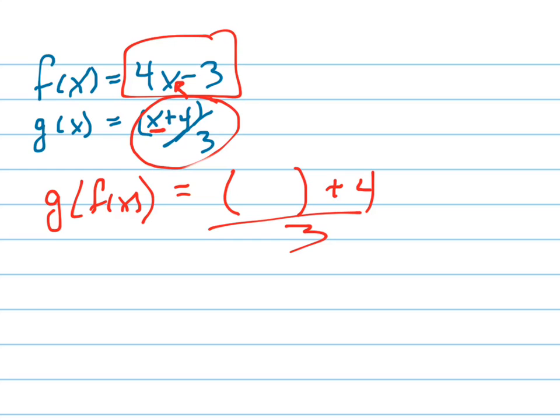because I'm going to plug, instead of x, I'm going to plug f of x in where I saw the x. And f of x is 4x minus 3. So 4x minus 3 goes in there.